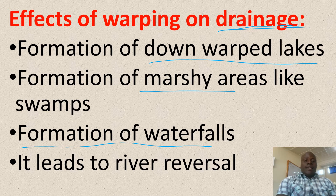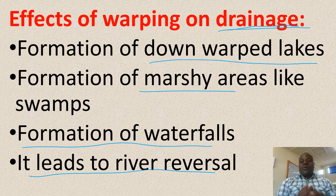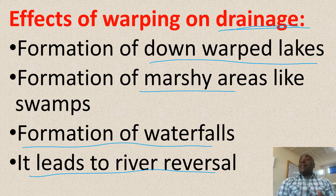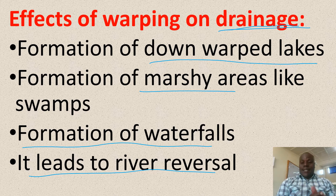It leads to river reversal. This is when a river changes its direction — and you know water finds its own level. So we believe that rivers flow from highlands to lowlands, so rivers must flow from anticlines to synclines.